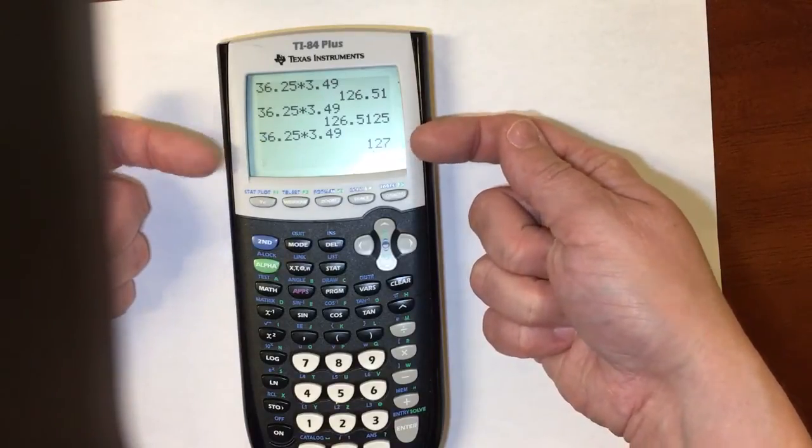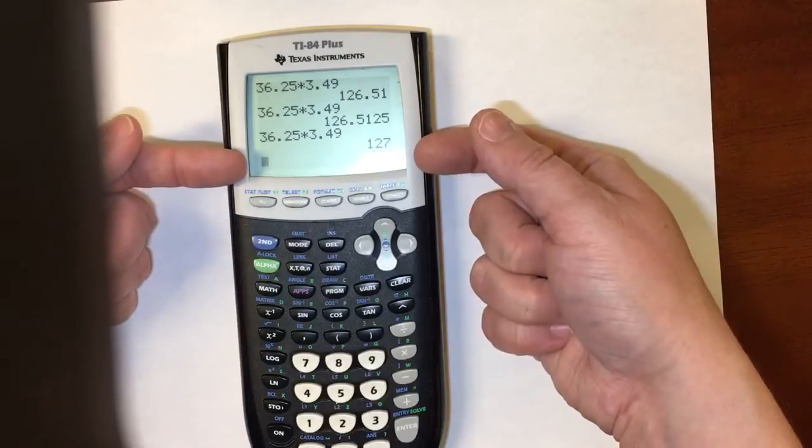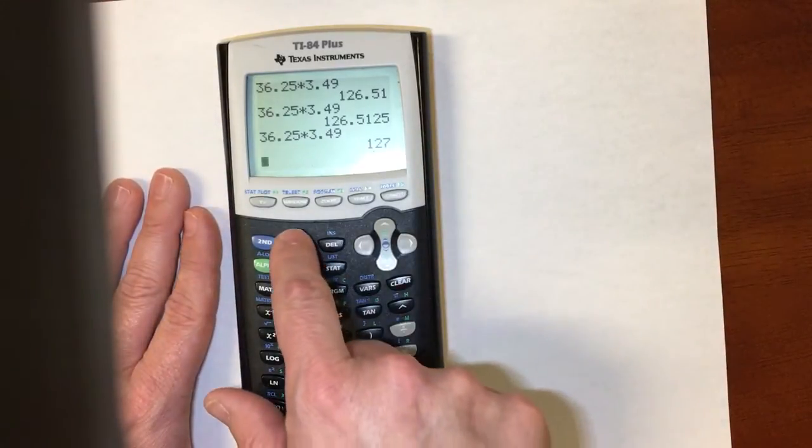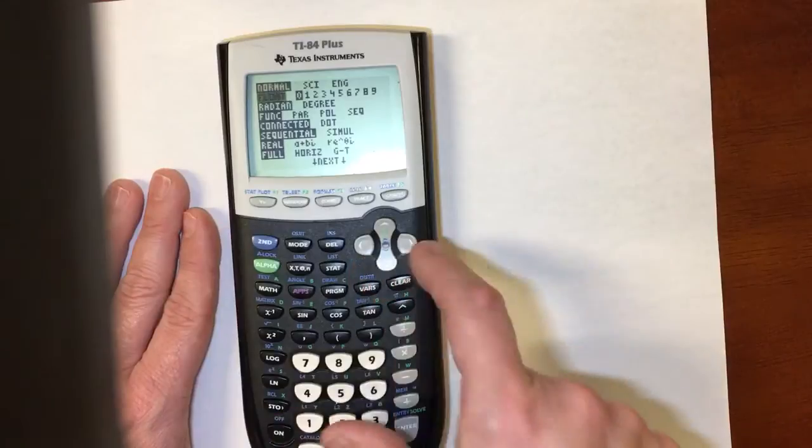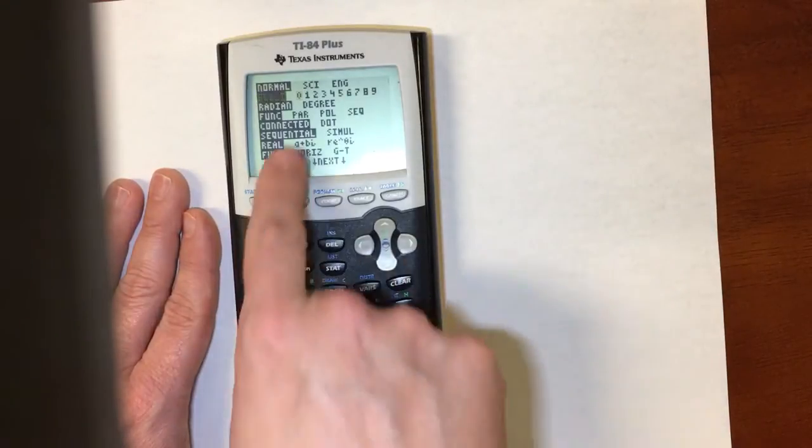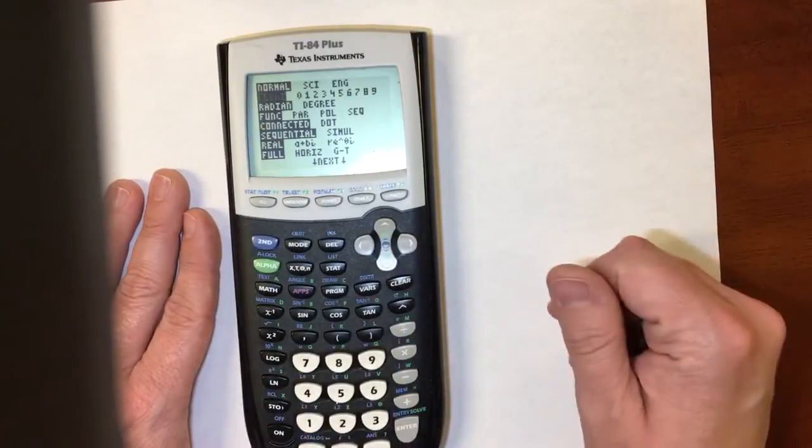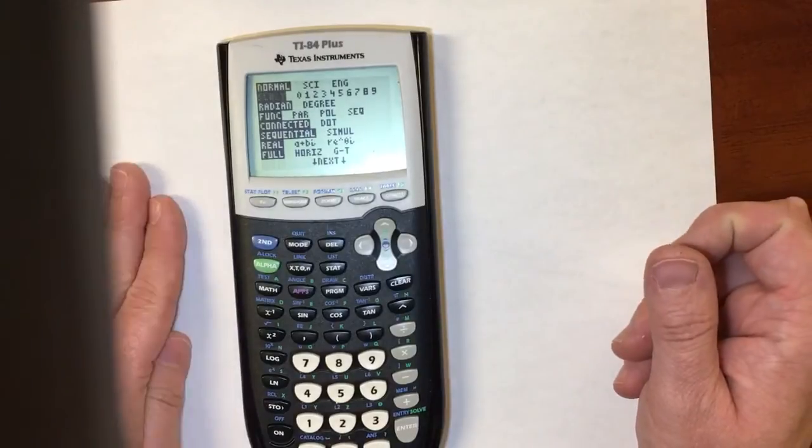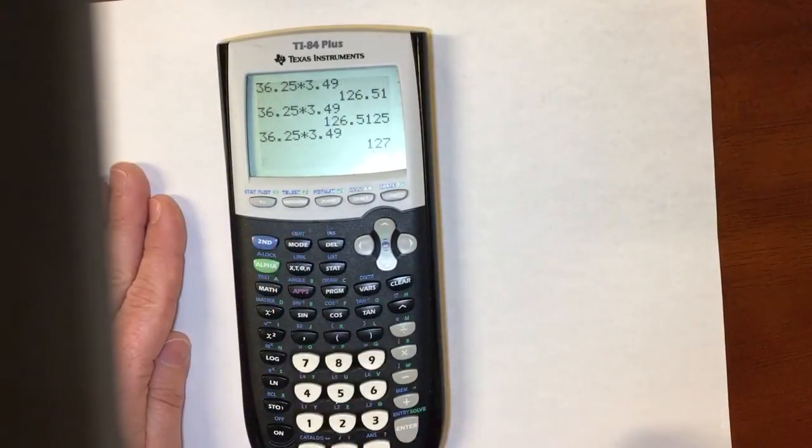So if you're going to use this feature, make sure that you know when it's on or off. So mode, float, and then if you turn it to float, that's just going to give you however many decimals are necessary. And second and quit to get out of there.